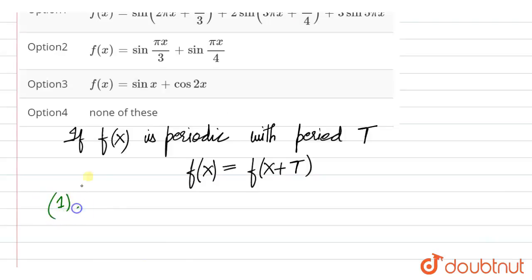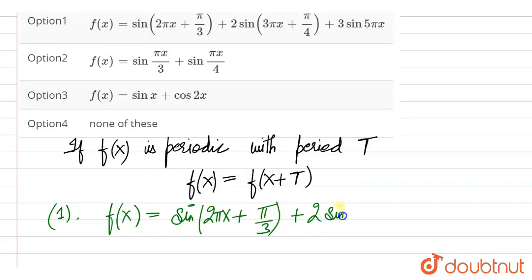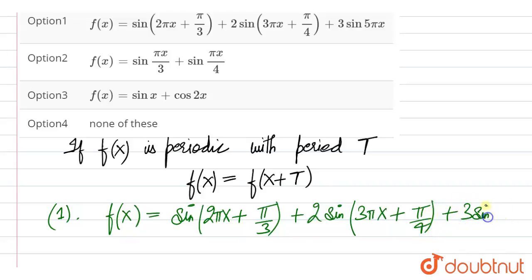Let us check option number 1. In option number 1, we have f(x) equal to sin(2πx + π/3) plus 2 times sin(3πx + π/4), and 3 times sin(5πx).